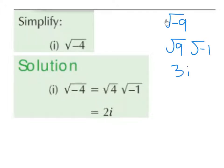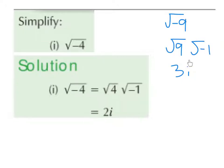Likewise, the square root of minus 9 we break down to be the square root of positive 9 multiplied by the square root of minus 1. The square root of 9 is 3, and the square root of minus 1 is i.